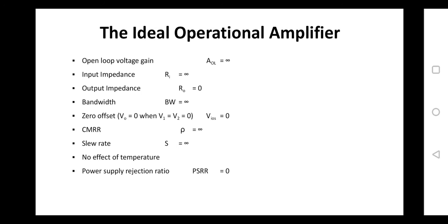The next ideal characteristic is slew rate, which specifies the derivative of output voltage with respect to time — meaning for every change of one microsecond, what will be the corresponding change in voltage. This is called the slew rate.